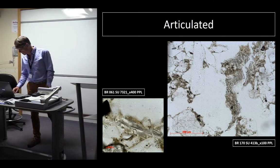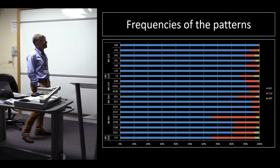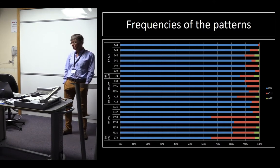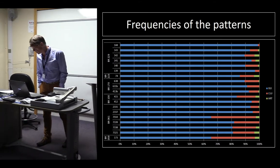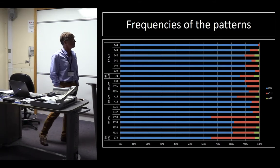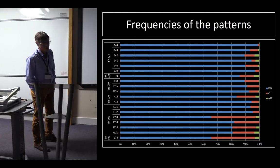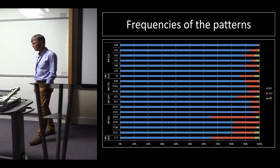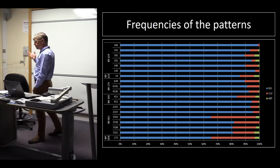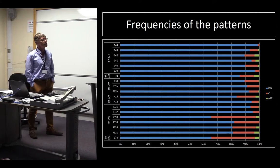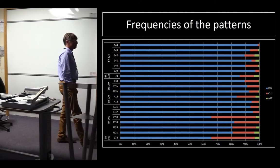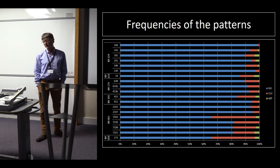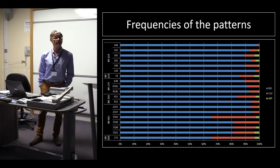Considering these patterns, and according to the units examined, we note various combinations of these distribution patterns at varying frequencies, which provides additional criteria to discriminate between these units. But we also note that we do not have any systematic occurrences of the articulated pattern — shown here in green — and this calls for an explanation. If we go back to the basic paradigm of phytolith taphonomy, which means in-situ decomposition of plant fragments, we should have at least a systematic occurrence of the articulated pattern, which is not the case.